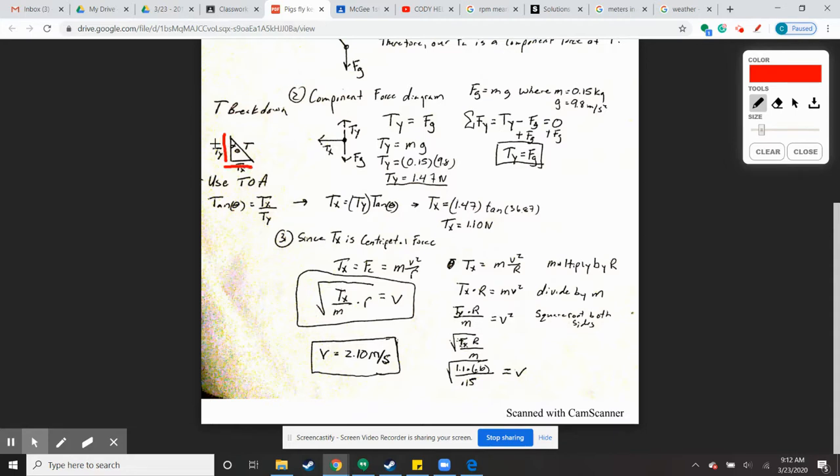This is your opposite, this is your adjacent. So we actually don't even need the tension in the rope to figure this out, because if we know Ty is equal and opposite to Fg, we can use tangent of opposite over adjacent to figure out the Tx.